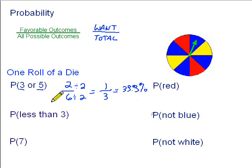Now, let's take a look at another one here. Probability of getting less than 3. Well, how many numbers on a die are less than 3? 1 is less than 3, 2 is less than 3. 3 is not less than 3, so that's it.